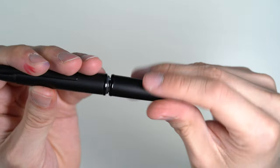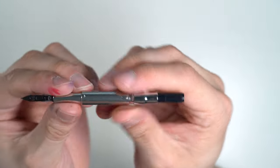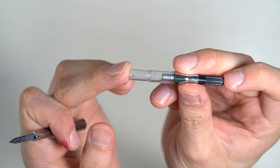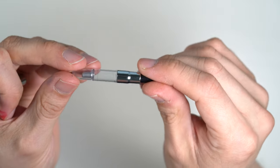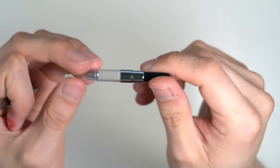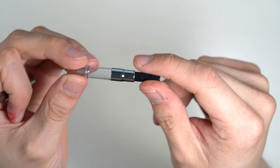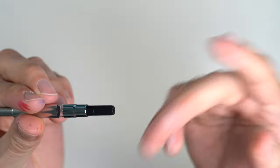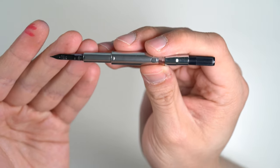On the back, we pull out the nib assembly here. We have this metal tube and the converter. This is the CON50 converter. Pilot has discontinued this converter. They now use one called the CON40, and I think that replaces the CON20. They eliminated the CON50 and CON20 when they came out with the CON40. At the top of the line is the CON70, which is a push button filler that holds a lot of ink.